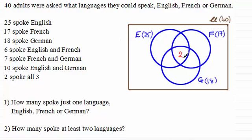So going back now to this one here that six spoke English and French, I can see that if I've got two here, that must mean that four spoke just English and French, but not German. And similarly, if seven spoke French and German, the total of these two regions, that just leaves us with five in there. And we've got 10 spoke English and German. So that means that of these two regions, it must be eight in here to make up the 10.